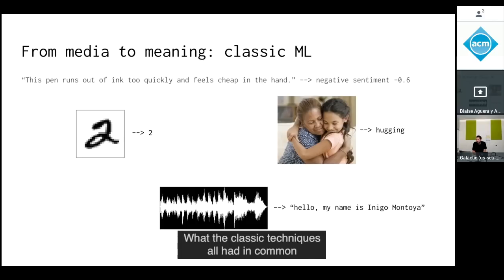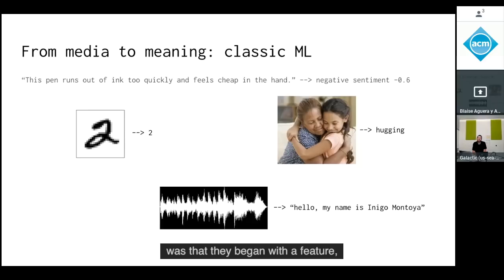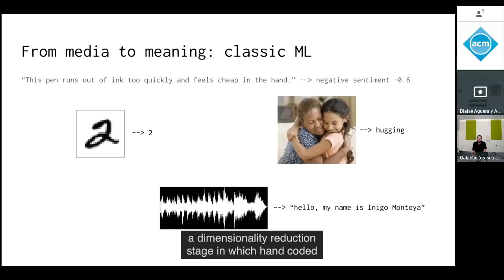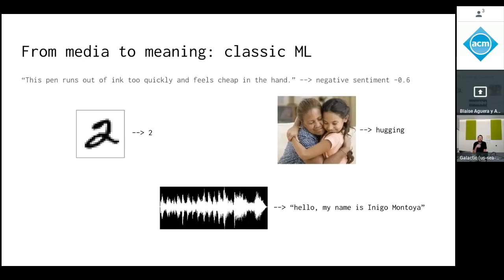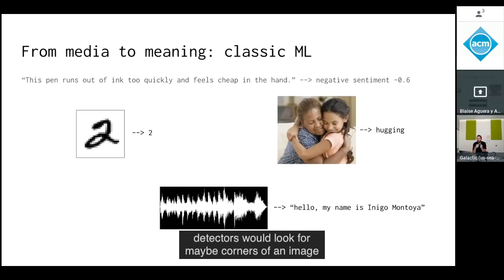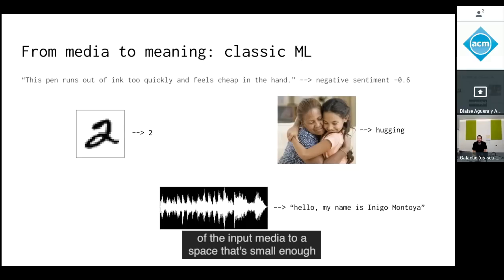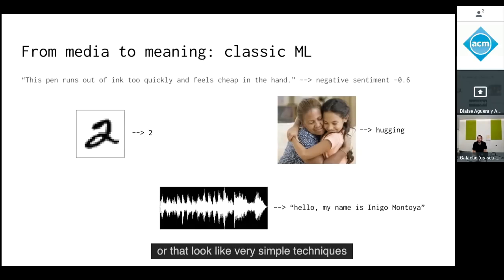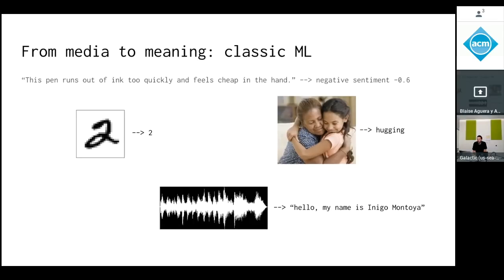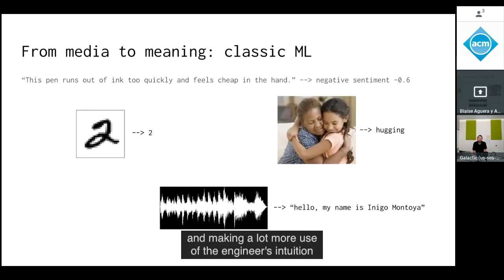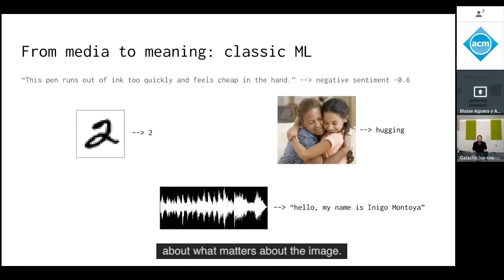What classic techniques all had in common was a feature reduction stage — a dimensionality reduction stage — in which hand-coded detectors would look for corners of an image, fiducial points on faces, or spectral components in sound, thereby reducing the input to a space small enough to apply regression or simple training techniques. This made models smaller, leveraged engineer intuition, and required far less training data.